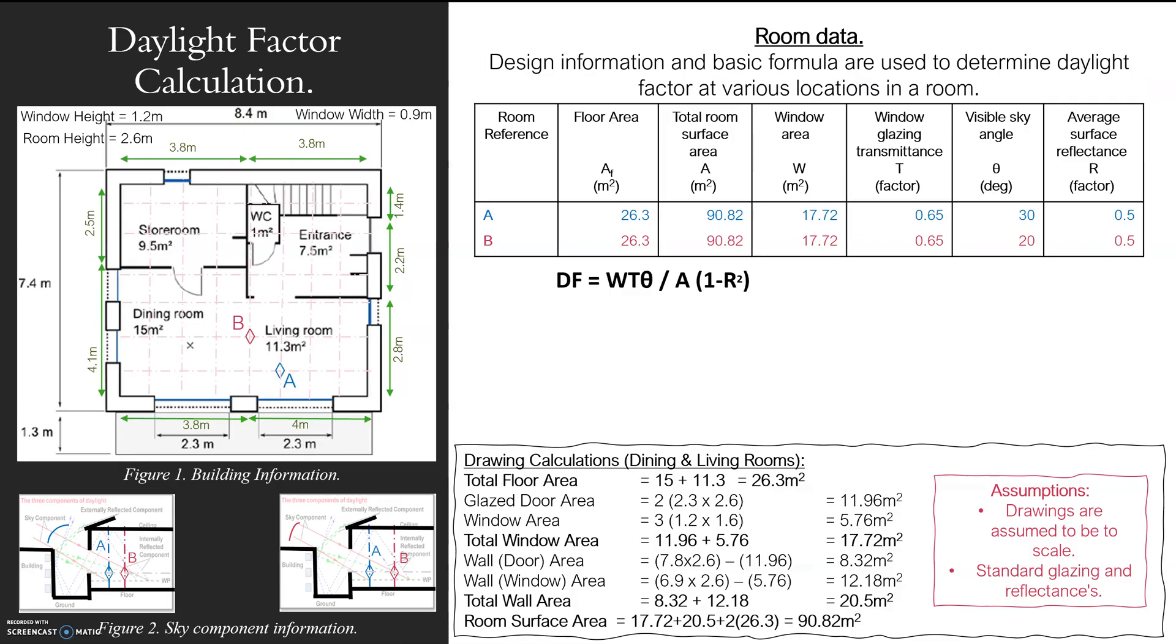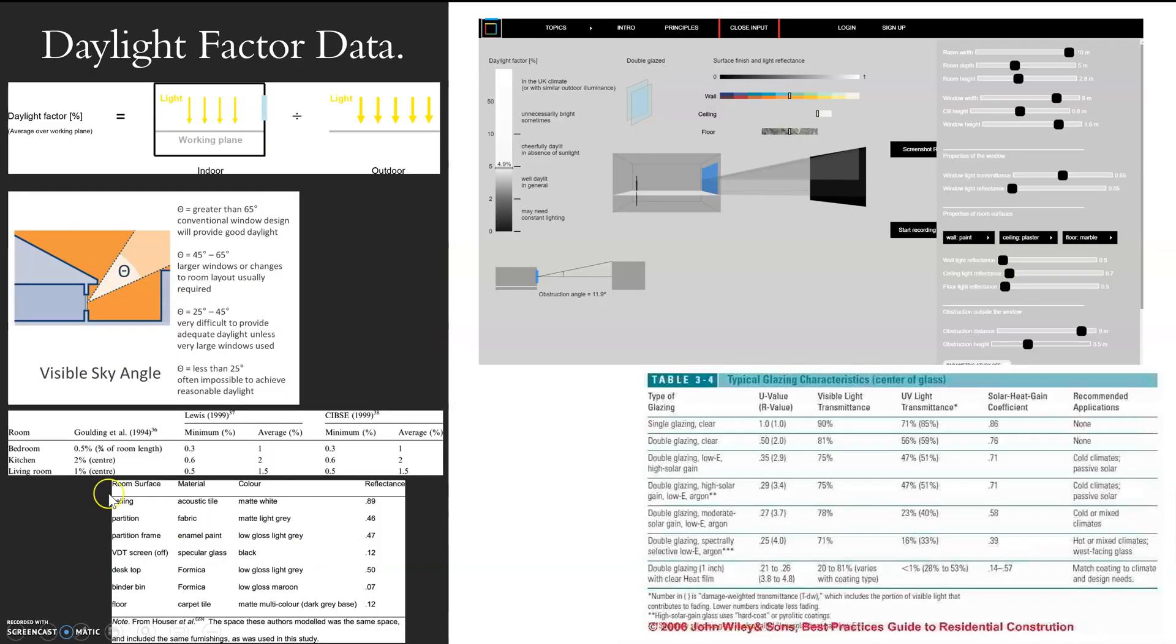Then we have a look - what were my values? 7.87 and 5.28. If you look at this table here, these are the recommendations for minimum and average daylight factors.